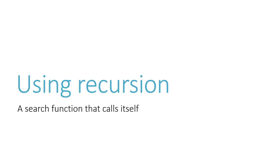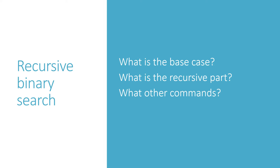Now let's try to do the same thing using recursion. Remember, a recursive function is a function that calls itself. In order to turn an iterative function into a recursive one, we have to answer three questions: what is the base case that stops the recursion, what is the recursive part — usually the last line — that calls itself, and what are the other commands that go in between those two parts?